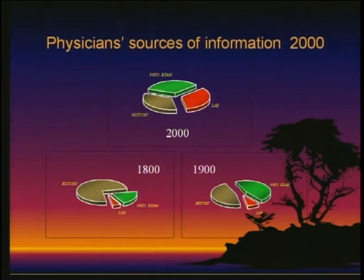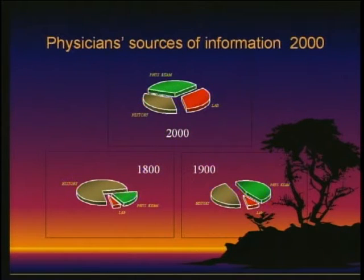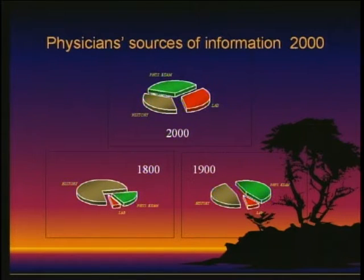By 2000, if you look at the pie chart, we have evolved rapidly. If you really look at a patient's chart, the lab is now an equal partner with the history and physical. From an electronic medical record standpoint, the first thing that everyone wants to have is the lab. The history and physical can come later.